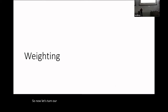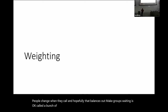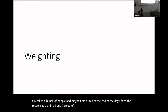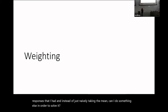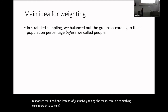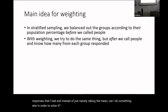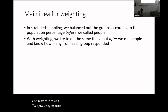Stratification changes who you call before you start. Weighting is: I called a bunch of people, I have the responses I have, and instead of naively taking the mean, can I do something to solve the challenges? Weighting is just trying to mimic the benefits of stratification, but doing it after you've already called people.